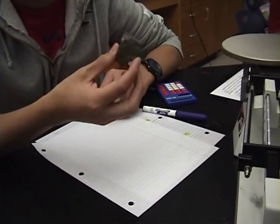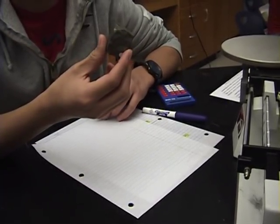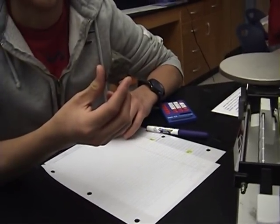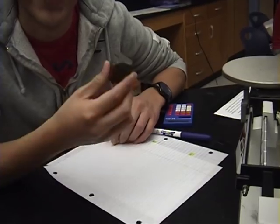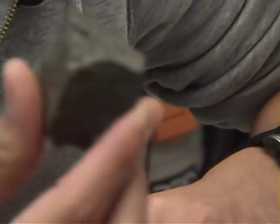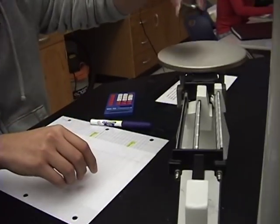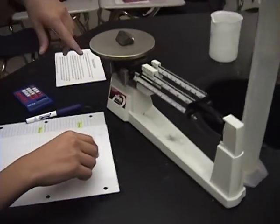Hello. This is basalt. Look at it. Yes. Alright. So today, we'll find the density of basalt. First of all, you find the mass of basalt. You put it in the triple beam balance.